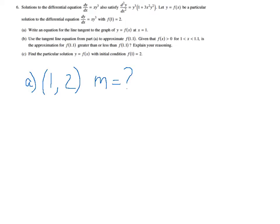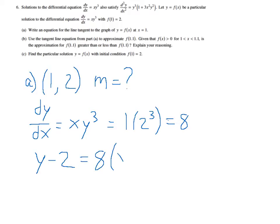To find the slope, we use the derivative. So since dy/dx equals x times y cubed, just plug in what we know, which is that x is 1 and y is 2. When we work that out, we get a slope of 8. So my tangent line then in point slope form is y minus 2 equals my slope 8 times x minus 1. And that's my tangent line.